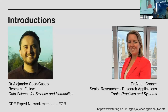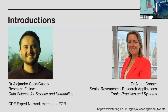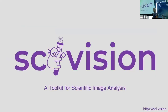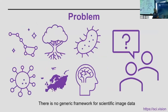Hi everybody, I'm Alden. I am a Senior Researcher for Research Applications at the Turing, in the Tools, Practices, and Systems Program. It's been great to see so many of you talking about data, interoperability, and reuse — that's what we really focus on. One of the tools for this is called SciVision — a toolkit for scientific image analysis. Many different problems that use imaging and computer vision are facing similar challenges, even though they may come from absolutely different domains.